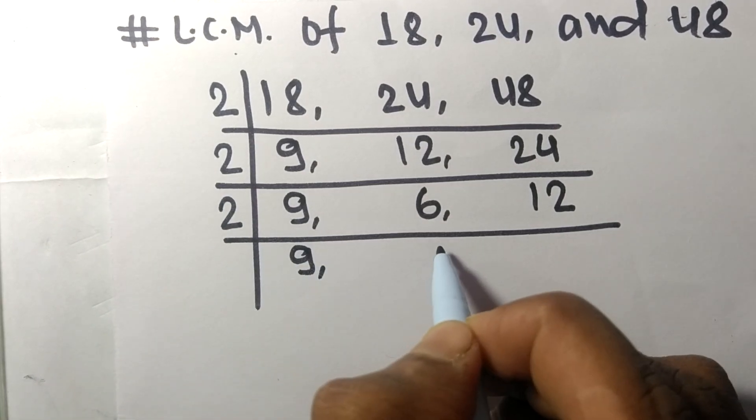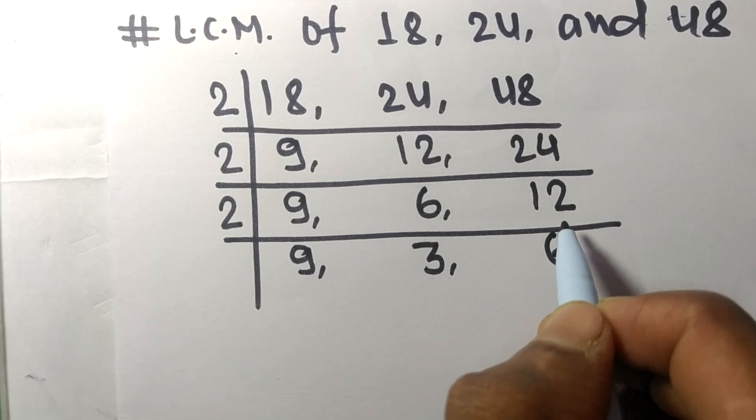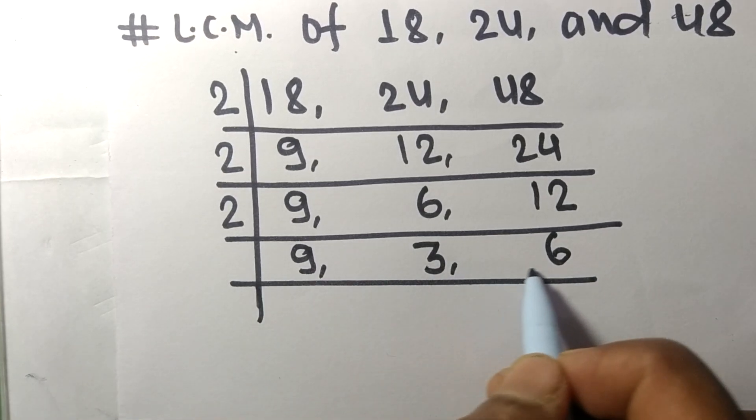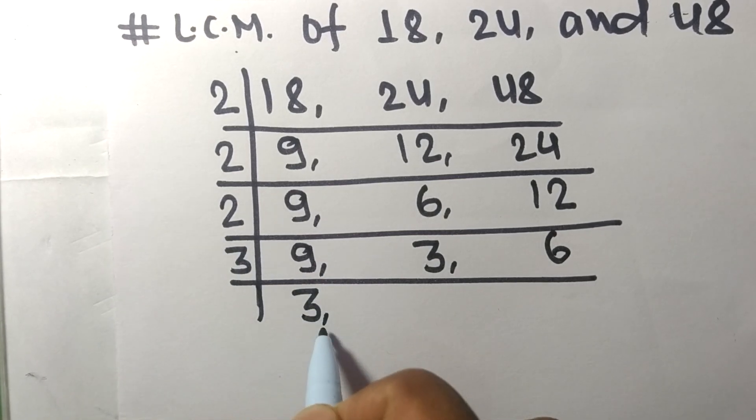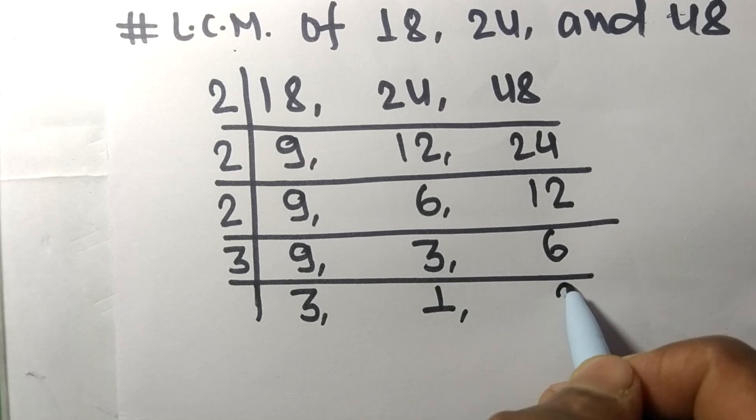2 times 3 equals 6, 2 times 6 equals 12. Now all these numbers are divisible by 3, so 3 times 3 equals 9, 3 times 1 equals 3, 3 times 2 equals 6.